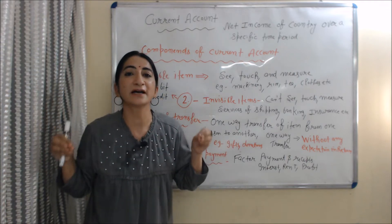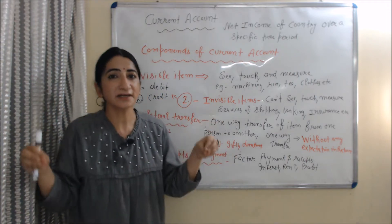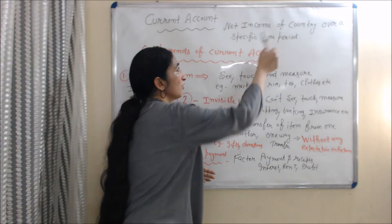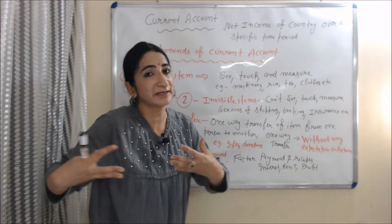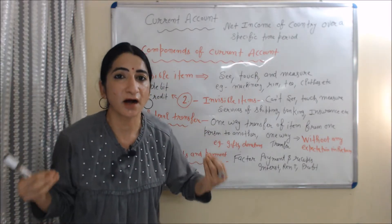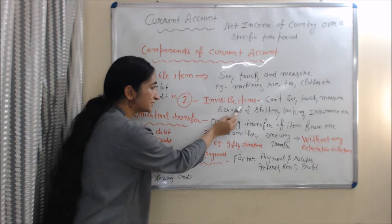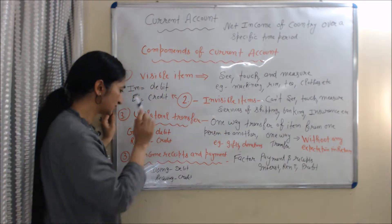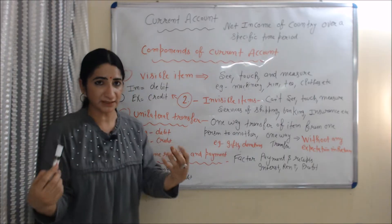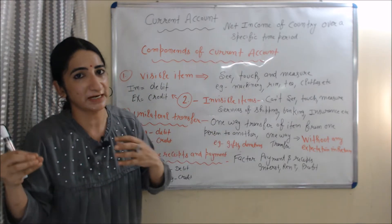Firstly, we discuss about the current account of balance of payment. The current account represents the net income of a country over a specific time period. The components of current account of balance of payment are: visible items, invisible items, unilateral transfer, and income receipts and payments. One by one we will discuss about each component.